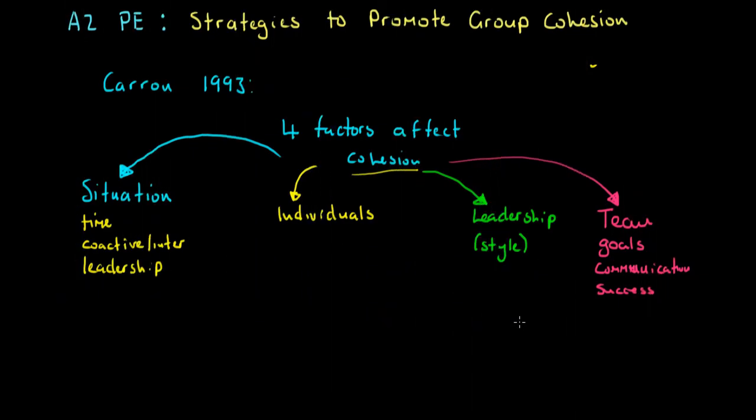In my very last video, which I've literally just finished recording, I talked to you all about the notion of group cohesion. We looked at Steiner's model, and I've just copied across to here the idea of Carron's model. Carron suggested there were four factors that affected cohesion: the situation, the different individuals and member characteristics.